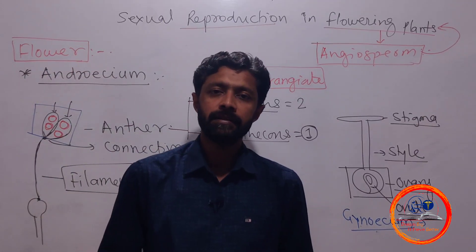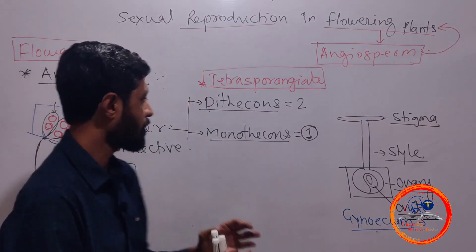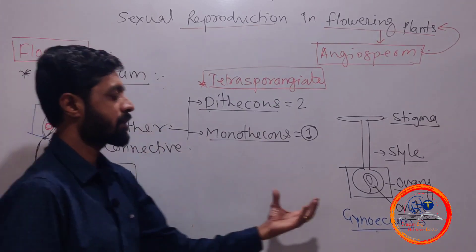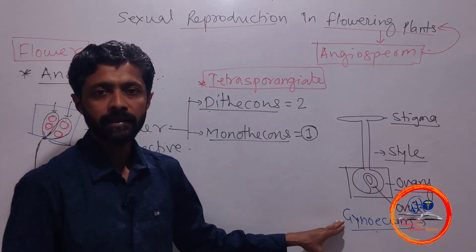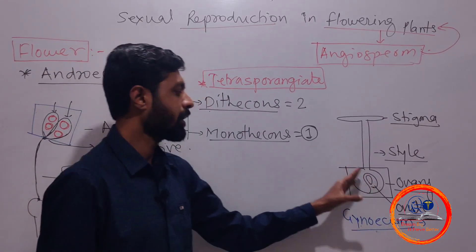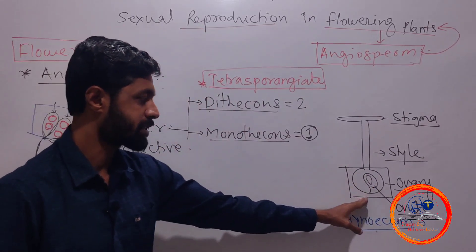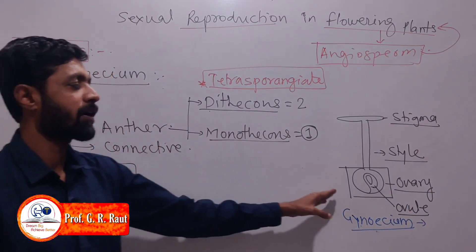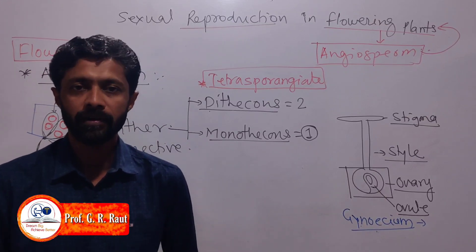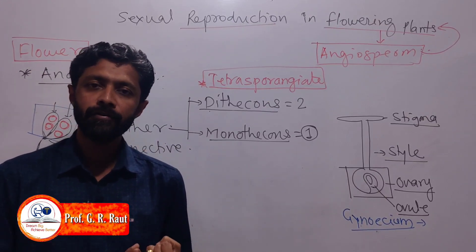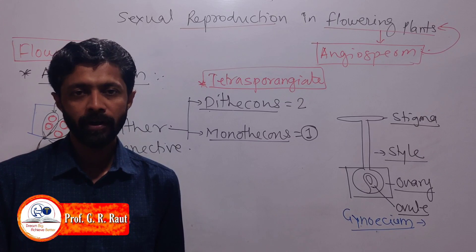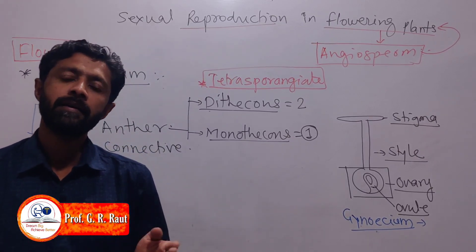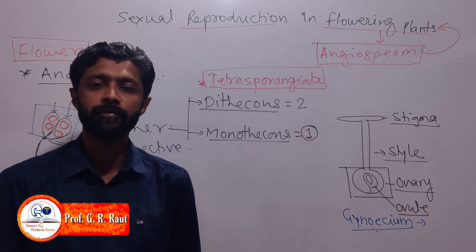A flower with both androecium and gynoecium is called a bisexual flower. A flower with only one of the two is called a unisexual flower. We have considered monoecious plants and dioecious plants in the morphology of flowering plants.